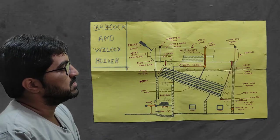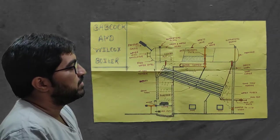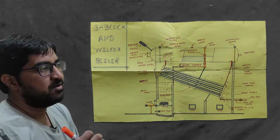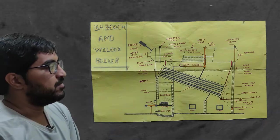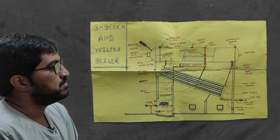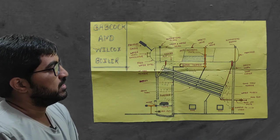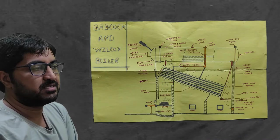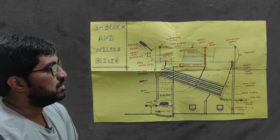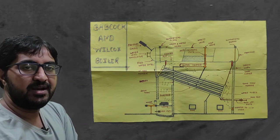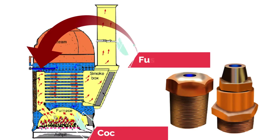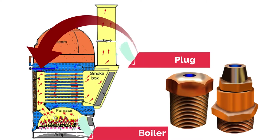There is also a manhole provided for inspection purposes, and supporting beams using frame structure as well as brick structure. To operate the boiler safely, we provide a safety valve, fusible plug, and pressure gauge. The function of the safety valve is to provide safety to the boiler. Regarding the fusible plug — whenever the water level in the shell is reduced, it will melt.